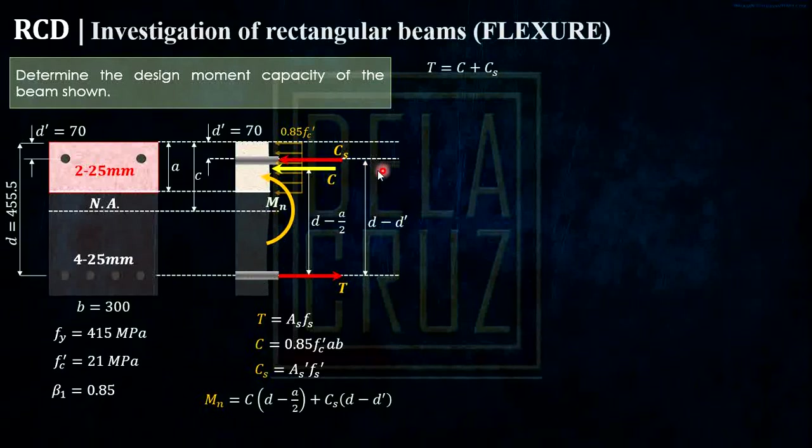So let me solve first the tension and compression bars. For the tension bars is 4 na 25mm. So that is 1,964 mm squared. For the compression bars, that is AS prime. So dalawa lang, dalawang 25mm. So actually half lang nito, 982 mm squared. Now, take note, we have two steel bars. Tension steel bars.